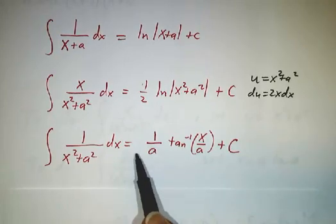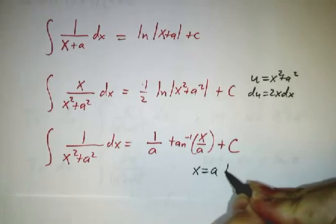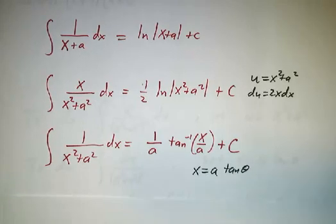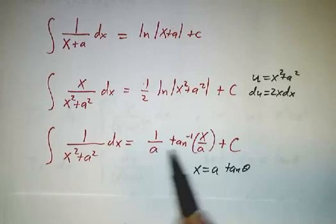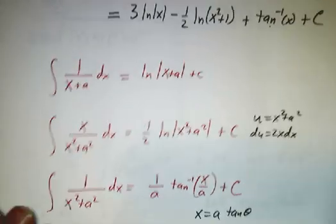And when you have 1 over x squared plus a squared, you do the trig substitution x equals a tangent theta, and when all the dust settles, you get 1 over a times the arctangent of x over a plus a constant. So the integrals are a bit more complicated than the linear ones, but you can do them.